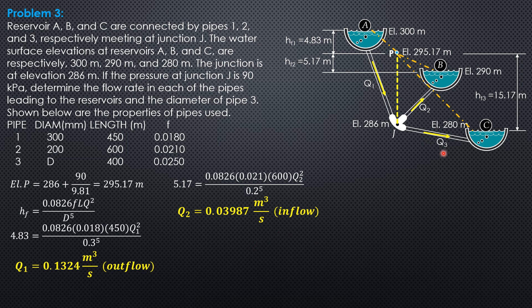Then finally for Q3. From the figure, Q1 equals Q2 plus Q3. So 0.1324 equals 0.03987 plus Q3. Q3 is 0.09253 cubic meter per second. It is also inflow to Reservoir C.